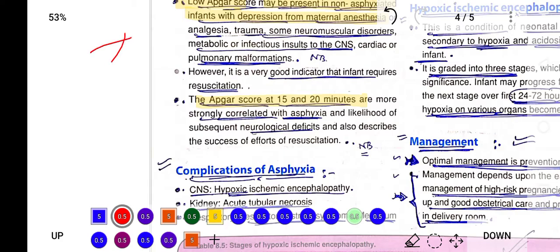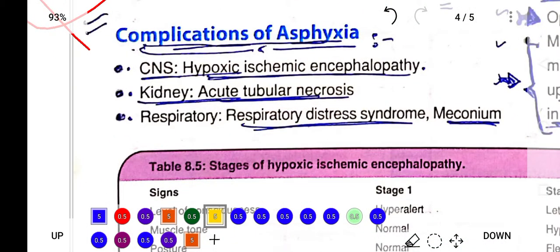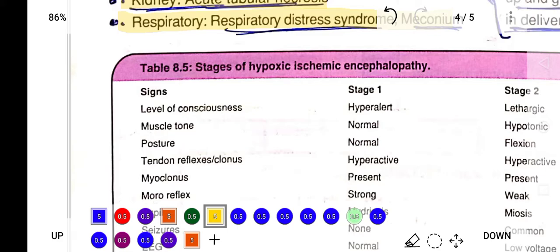The complications will be CNS complications like hypoxic ischemic encephalopathy, in the kidney acute tubular necrosis can develop, respiratory distress syndrome, and meconium aspiration syndrome can develop because of birth asphyxia.